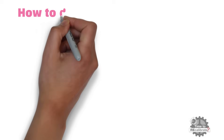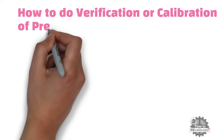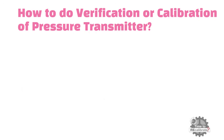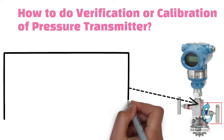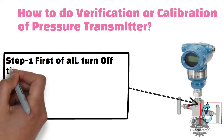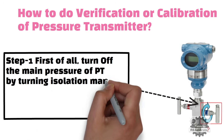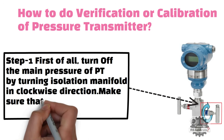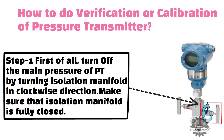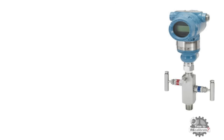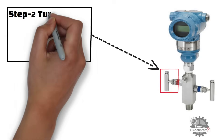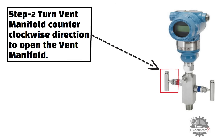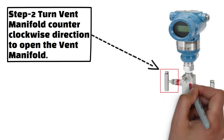How to do verification or calibration of a pressure transmitter. Step 1: Turn off the main pressure to the pressure transmitter by turning the isolation manifold in a clockwise direction. Make sure that the isolation manifold is fully closed. Step 2: Turn the vent manifold anticlockwise in order to open the vent manifold.